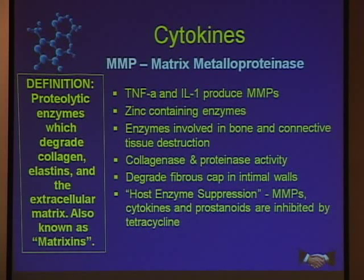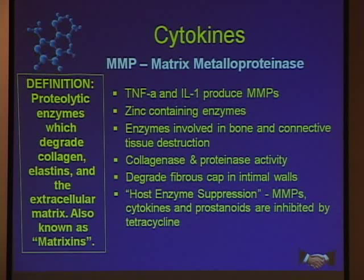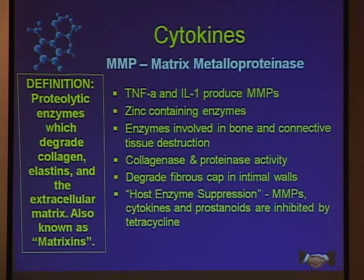Matrix metalloproteinases, or MMPs, are another important class. TNF-alpha and interleukin-1 produce MMPs. They are zinc-containing enzymes — hence the term 'metallo' — involved in bone and connective tissue destruction. These proteinases, or collagenases, destroy and lyse apart connective tissue, which is why they can degrade the fibrous cap on the intimal wall of the blood vessel.